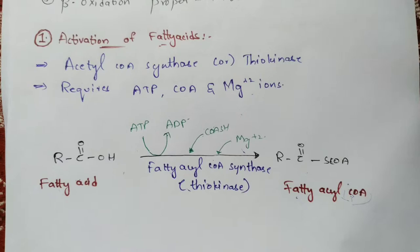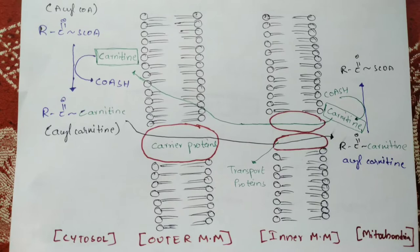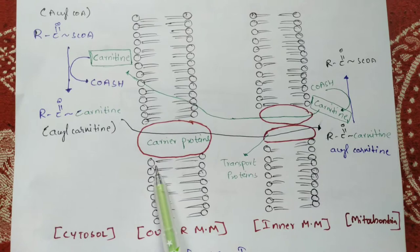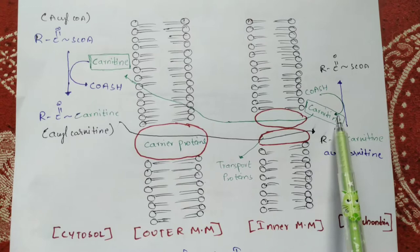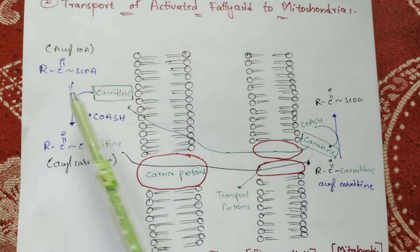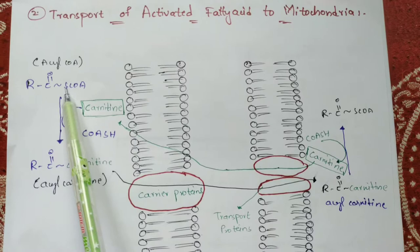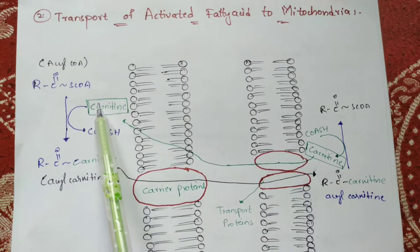Coming to the second step: transport of the activated fatty acid to the mitochondria. There is a mechanism involved here. The cytosol is adjacent to the outer mitochondrial membrane, and the mitochondria consists of two membranes — the outer mitochondrial membrane and the inner mitochondrial membrane. When activation of the fatty acid takes place, it forms fatty acyl-CoA, and this fatty acyl-CoA will react with carnitine, where carnitine plays a major role.